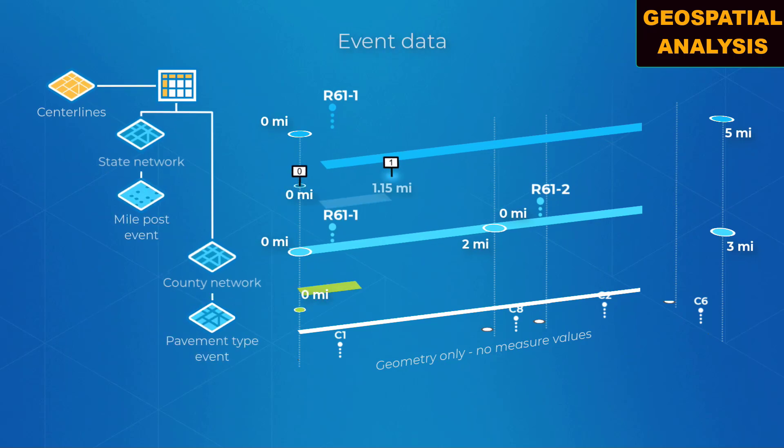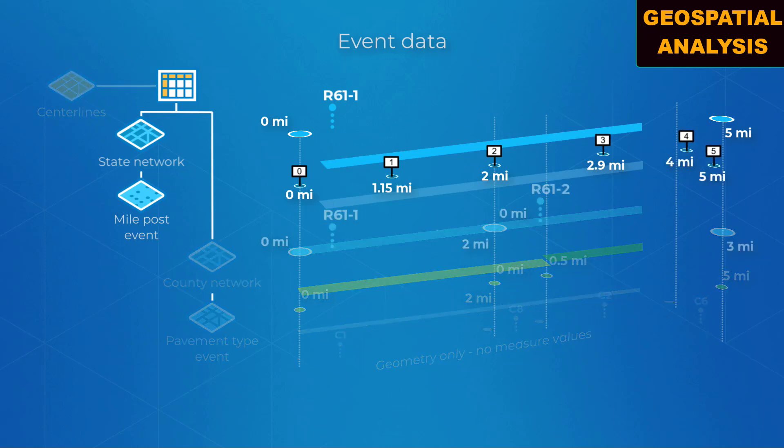Event data can also be collected and stored for each network in your LRS. ArcGIS Roads and Highways can even translate event measures between multiple LRS networks.